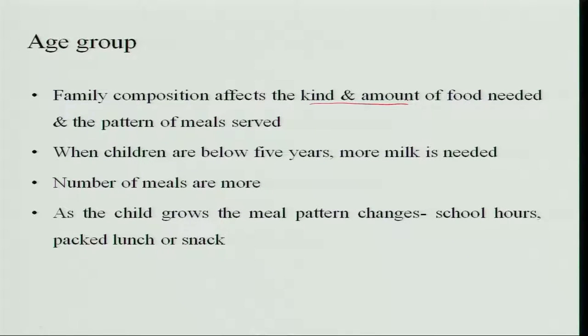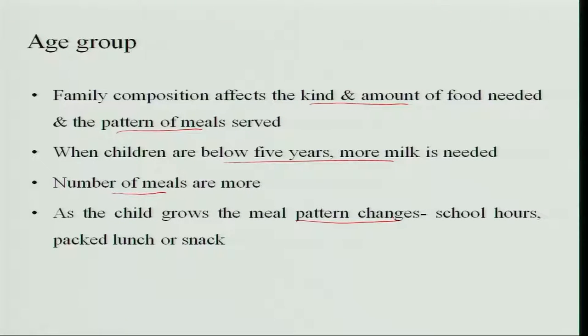The age group and family composition affect the kind and amount of food needed and the pattern of meals served — whether each person is served separately, everyone sits together, packed lunch is needed, or meals are eaten outside. When children are below 5 years, the requirement for milk is more and the number of meals is also more because they cannot take large quantities at a time. Their requirement is high but intake is less, so they are fed more frequently to meet nutrient requirements. As the child grows and starts going to school, the meal pattern changes. Depending on school hours, a packed snack and packed lunch have to be planned — a snack at 11 o'clock, a packed lunch, and another snack.